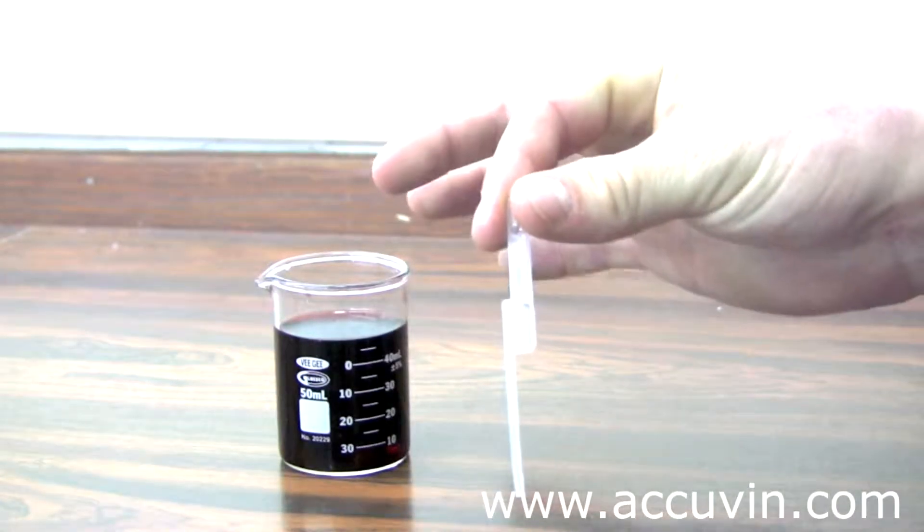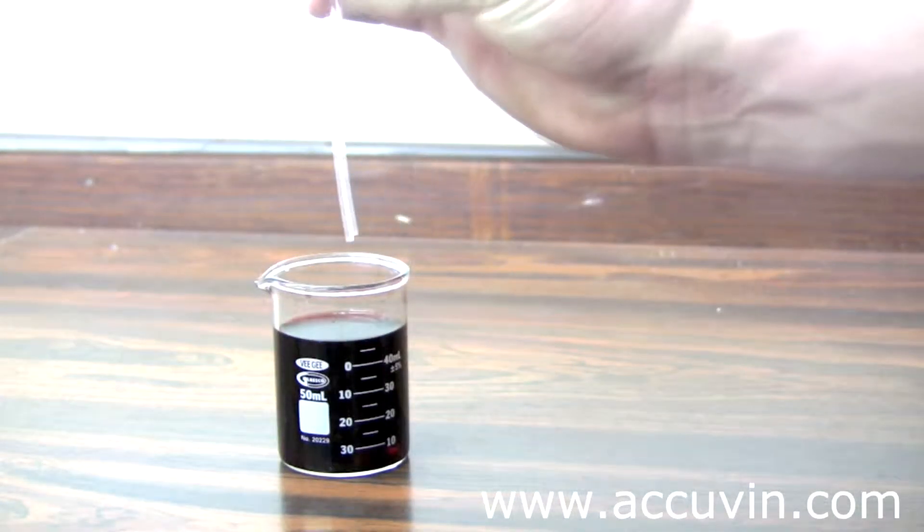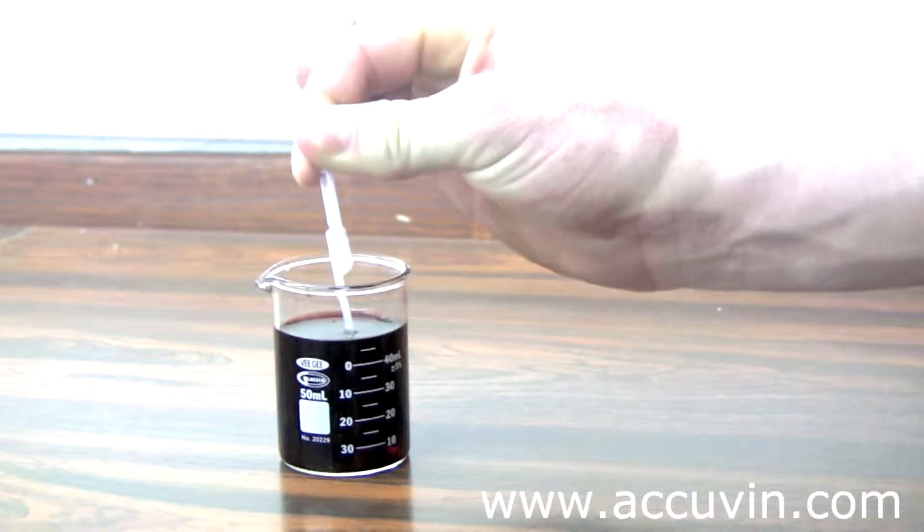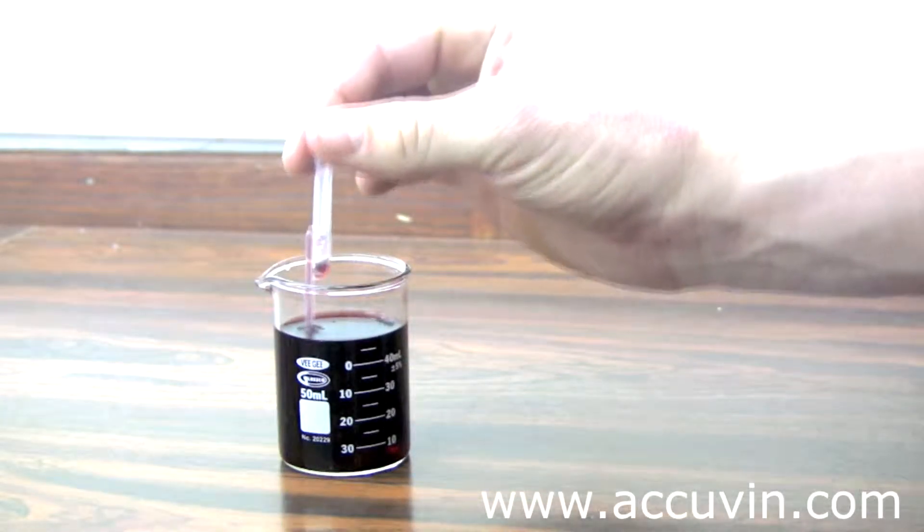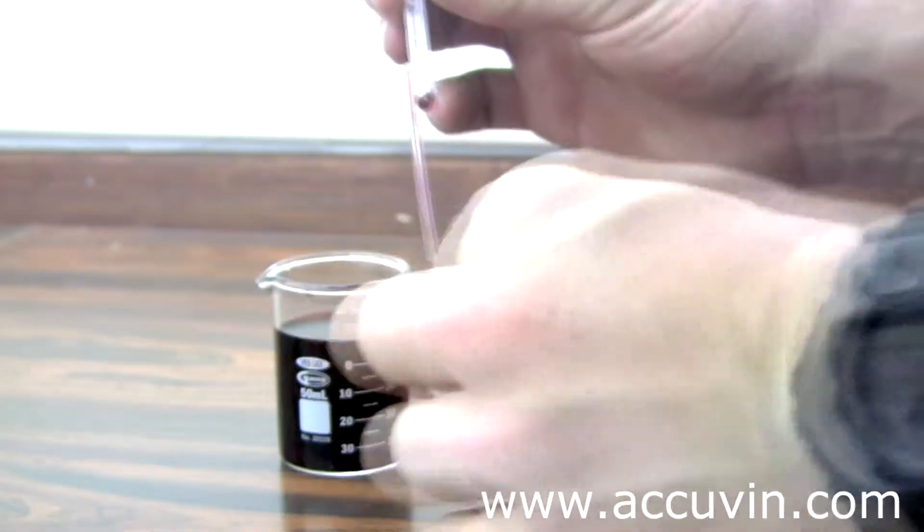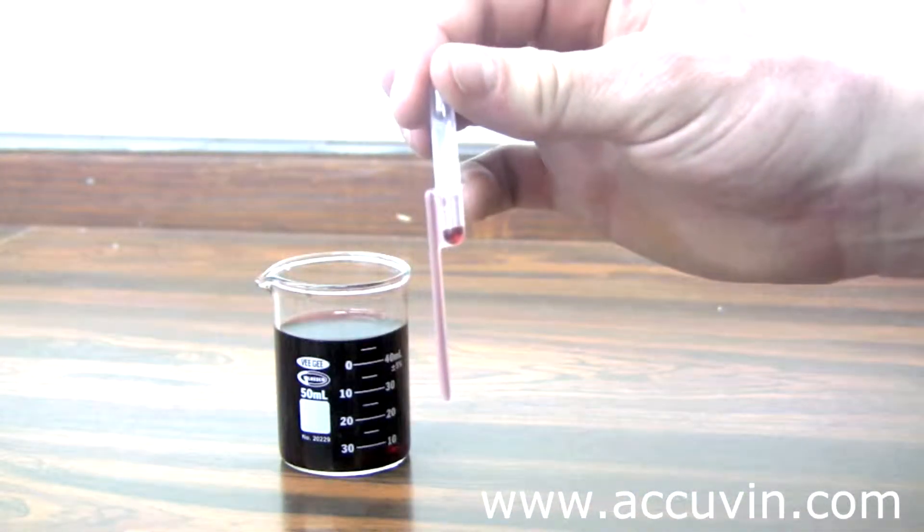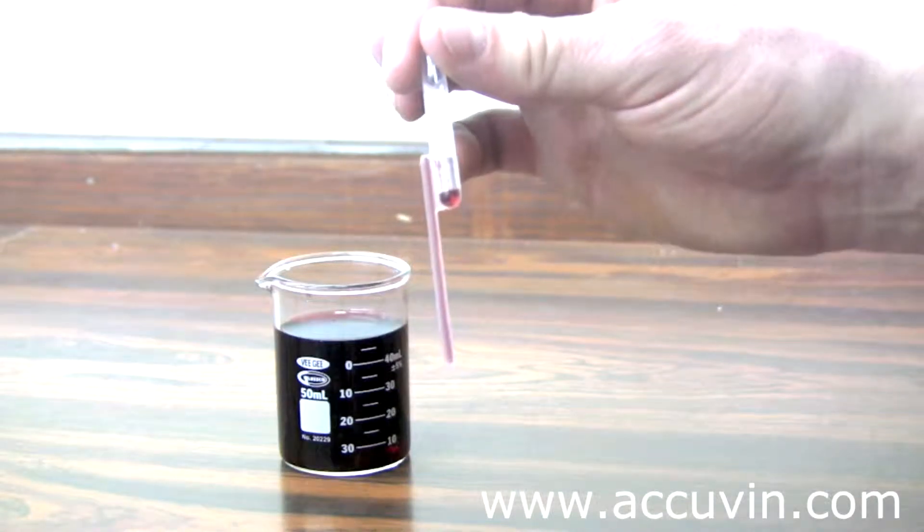Take the sampler and squeeze at the top, then put the tip of the sampler into the sample and release. Be sure to wipe off all excess liquid on the outside of the sampler, as any extra liquid will cause incorrect results.